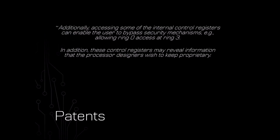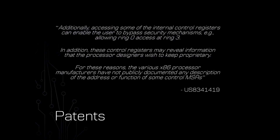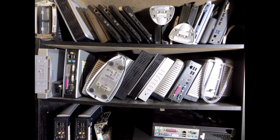They go on to say: 'In addition, these control registers may reveal information that the processor designers wish to keep proprietary.' That's kind of understandable — if I had some circumvention for all the privilege mechanisms on the processor, I'd probably want to keep that proprietary too. But then they go on to say: 'For these reasons, the various x86 processor manufacturers have not publicly documented any description of the address or function of some of the control MSRs.' So that means we're probably dealing with something undocumented. So I did what any rational person would do in this situation: I went out and bought 57 computers to start doing some research to see if I could dig into this idea a little bit further.